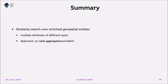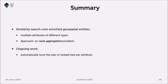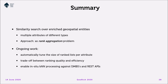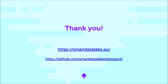To summarize, in this work we dealt with the problem of similarity search over enriched geospatial entities involving multiple attributes of different types, and treated it as a rank aggregation problem. Our ongoing work concerns automatically tuning the size of the rank list per attribute as a trade-off between rank quality and efficiency, and also enabling in-situ KNN processing against database systems and REST APIs. You can get more information from our website and updates of our open source code from our repository. Many thanks for your interest.